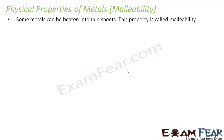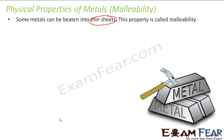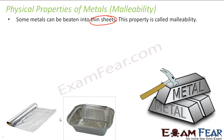Now, malleability. Malleability is the property of a substance that can be beaten into thin sheets. For example, if you take a metal and hammer it, you can get something like a thin sheet. The aluminum foil — if you see — and the containers you must have seen in hotels when you take a parcel, they are all aluminum and they are very, very thin. So, the property of any metal to be beaten into thin sheets is called malleability.